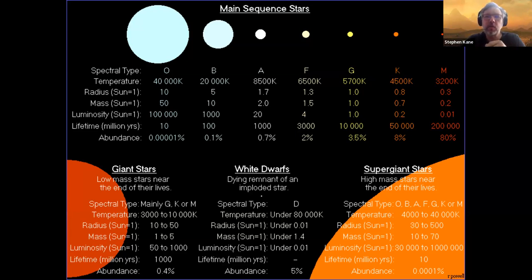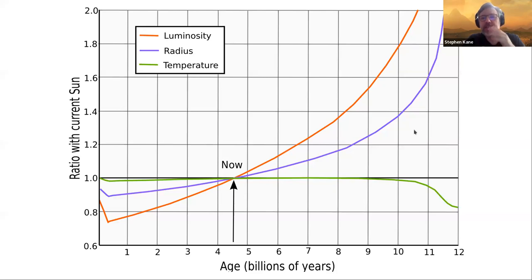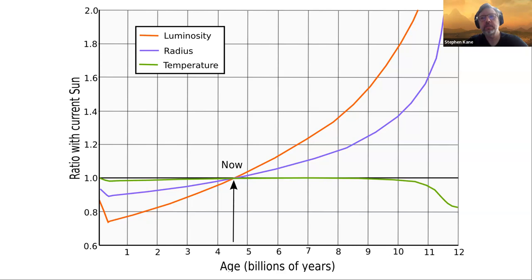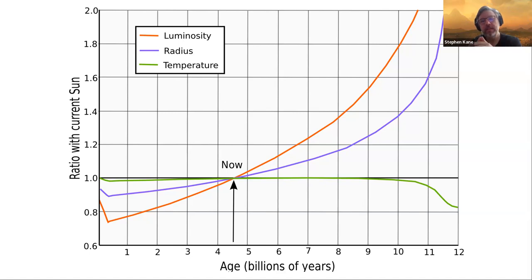Stars also change during their lifetime. The Sun is increasing in brightness — it was about 30 percent less bright at the beginning of our solar system formation. About four billion years ago the Sun was about 30 percent less luminous, and as it continues to age it will become more luminous, meaning more energy is received at the top of the atmosphere. So the question is: since the star is changing with time, how does the planet change in response?